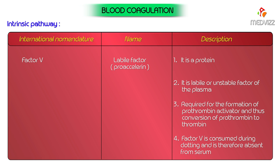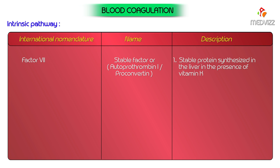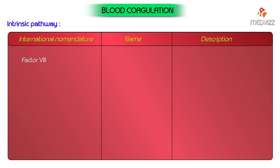Factor 7, stable factor (also known as auto-prothrombin 1 or pro-convertin): it is a stable protein synthesized in the liver in the presence of vitamin K. It is required for the activation of factor 10 in the extrinsic pathway. It is not consumed during clotting and therefore is present in serum as well as plasma. Factor 8, anti-hemophilic globulin (also known as anti-hemophilic factor A): it is a beta-2 globulin protein synthesized in the liver.